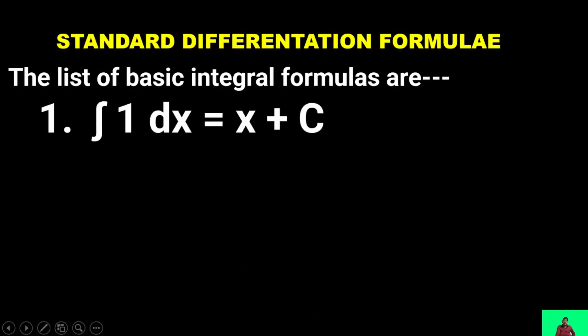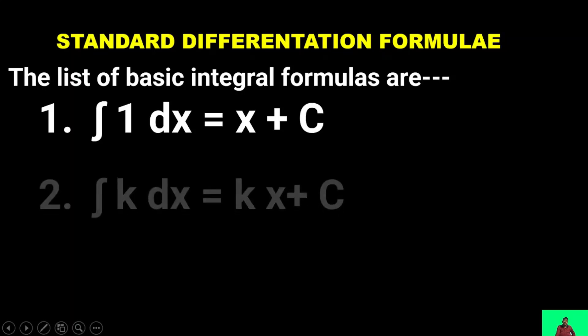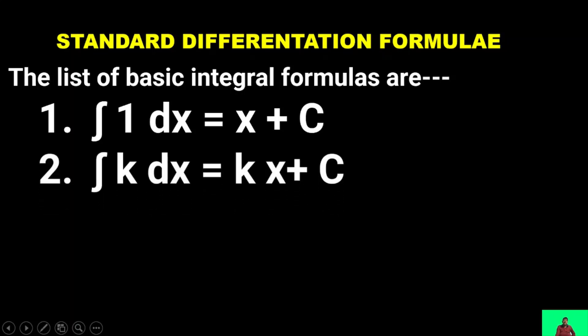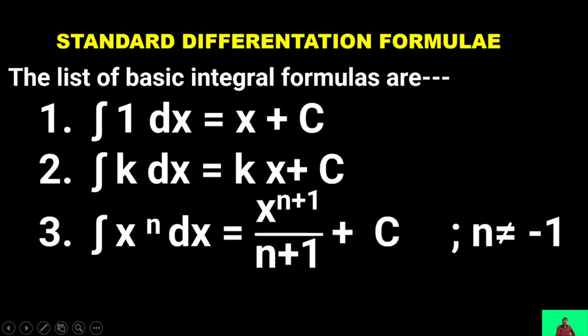The first formula: ∫1 dx = x + C. Second: ∫k dx = kx + C, where k is any real number and C is the constant of integration. Third: ∫xⁿ dx = x^(n+1) / (n+1) + C, where n ≠ −1.